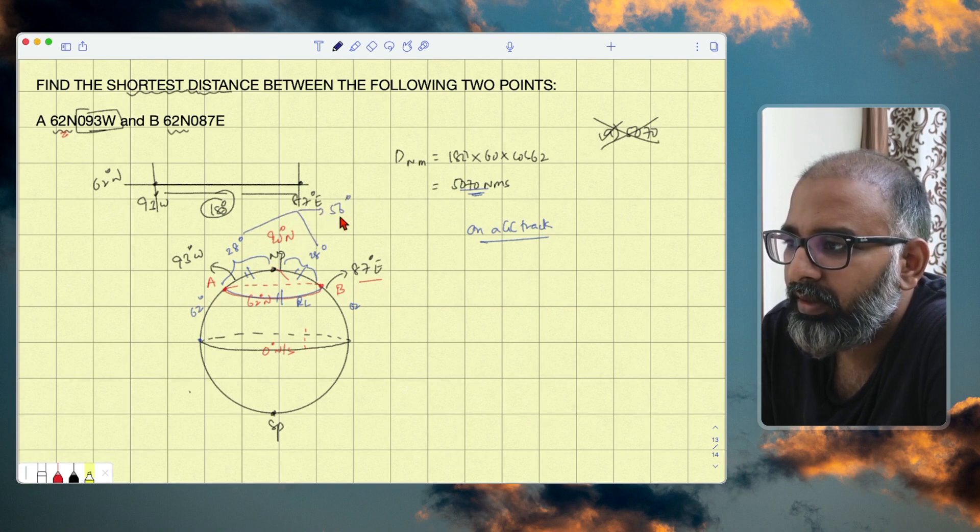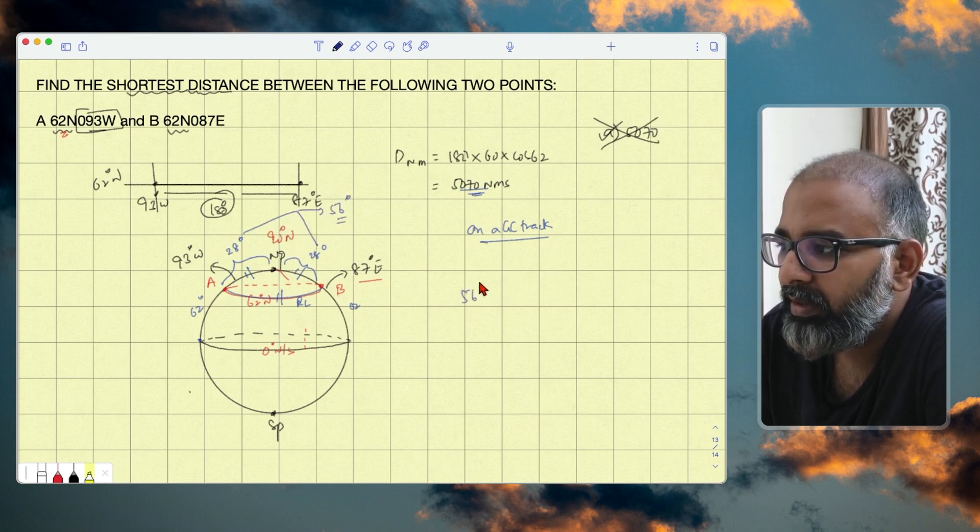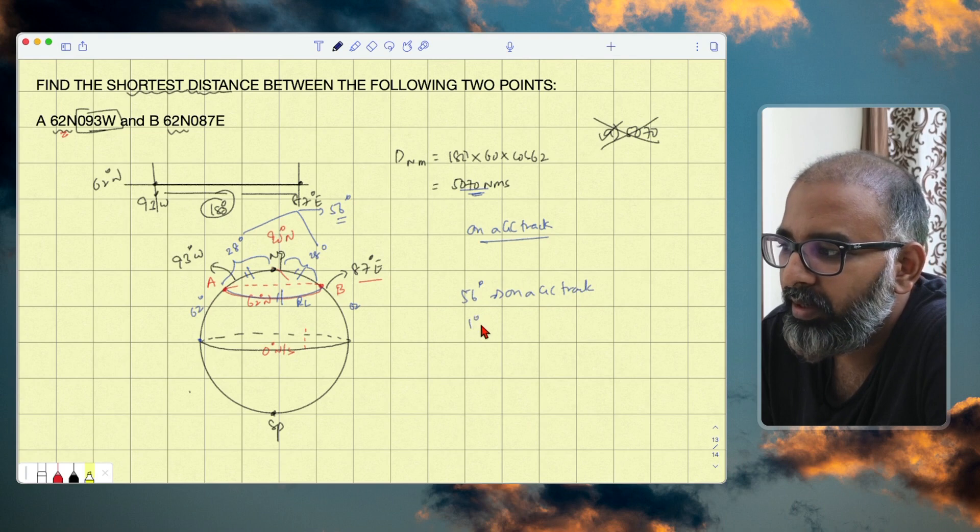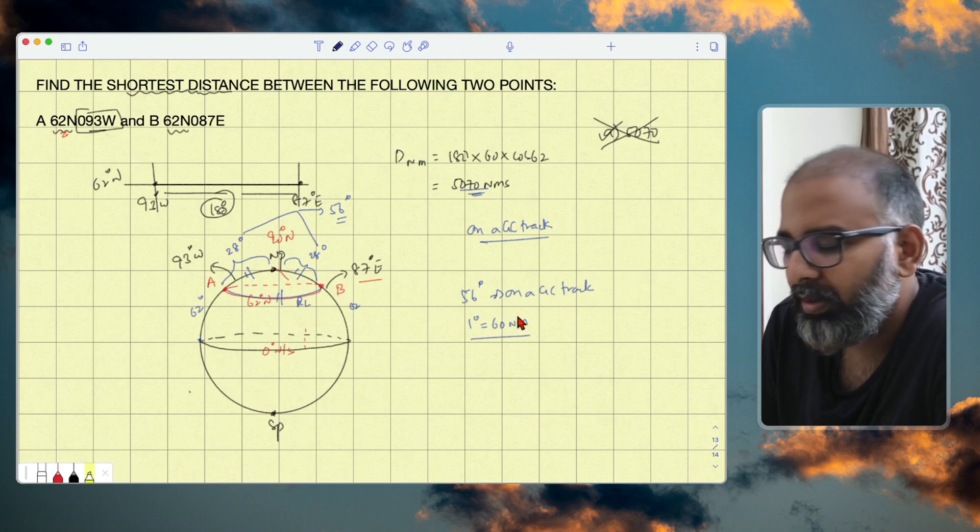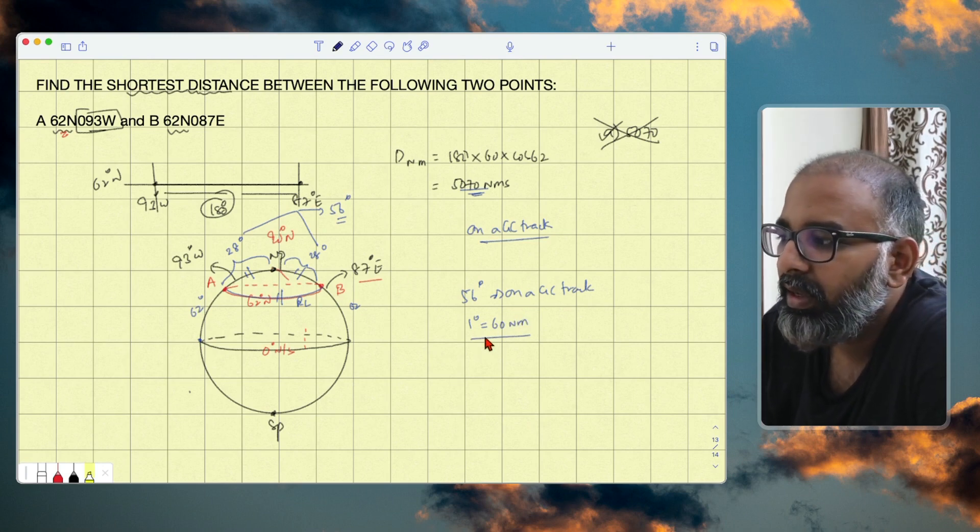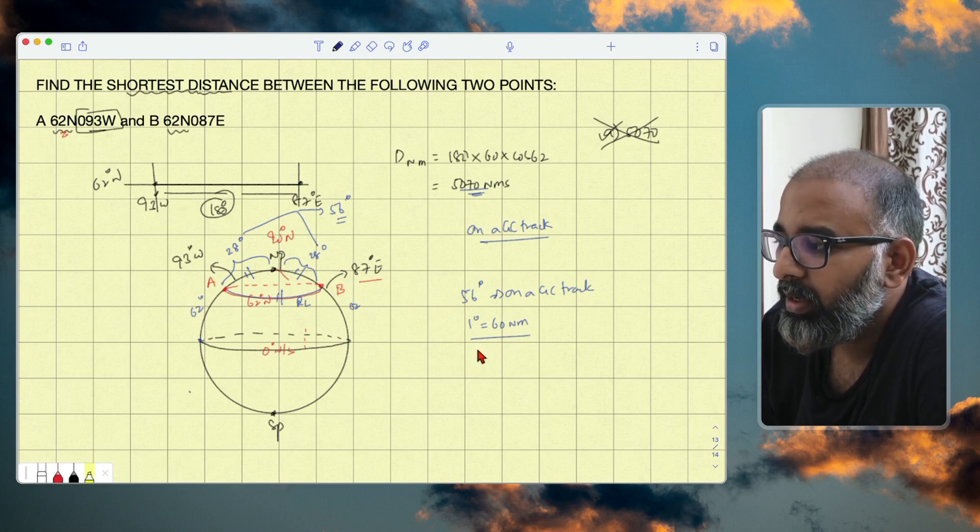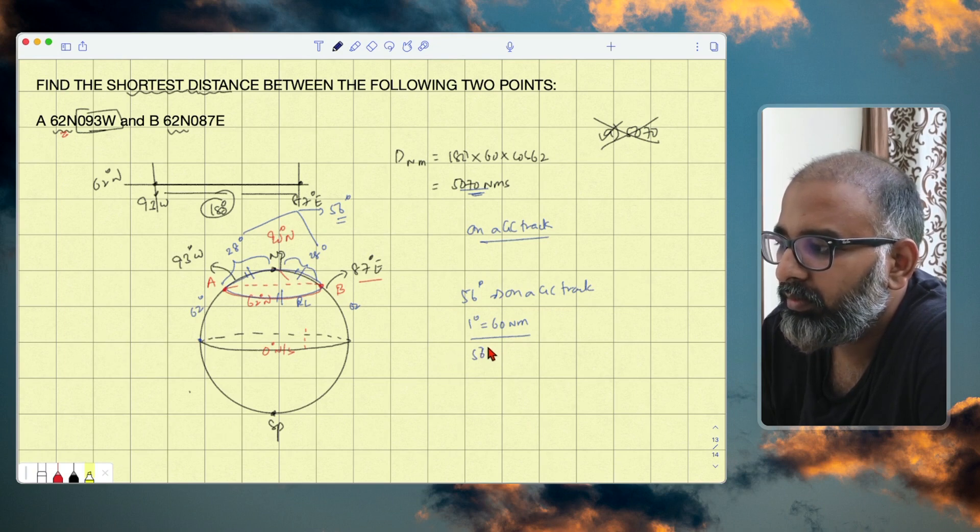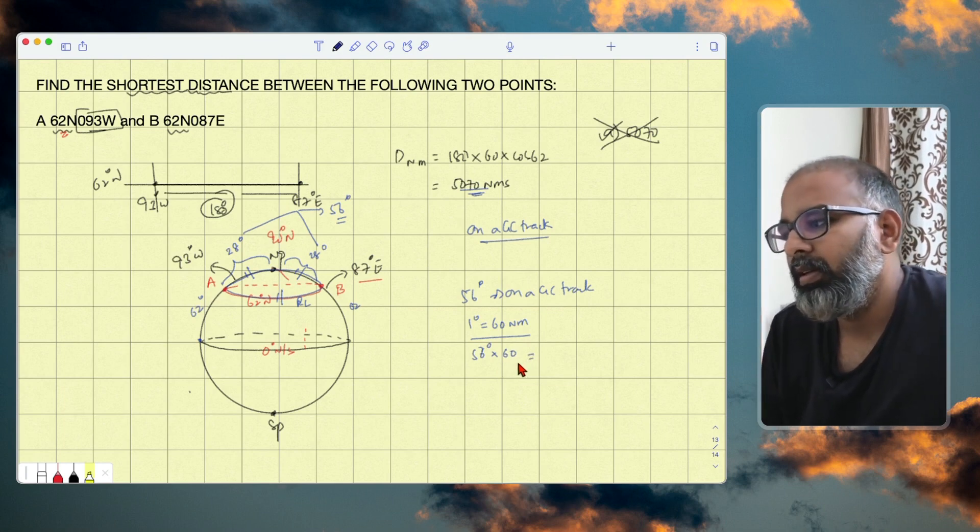Now 56 degrees you are traveling on a great circle track. On great circle track, one degree equals 60 nautical miles. So distance equals number of degrees on a great circle track times 60 - 56 times 60, that will be equal to 3360 nautical miles. So this is your correct answer, not 5070.